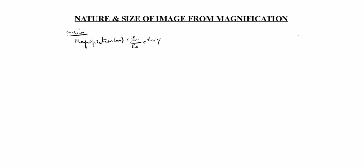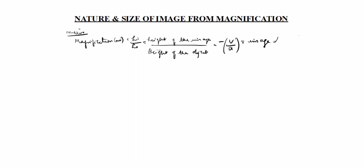What is magnification of mirror? Magnification m is equal to hi by ho. What is hi? hi is height of the image, ho is height of the object. This equals minus v by u, where v is image distance and u is object distance.